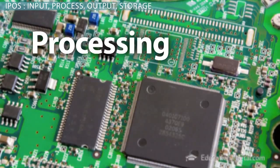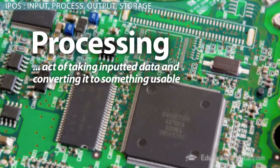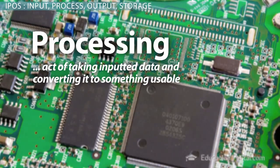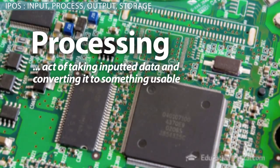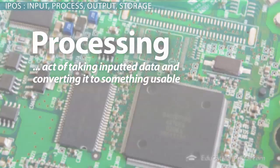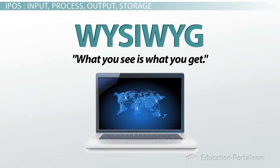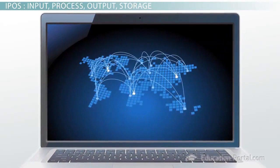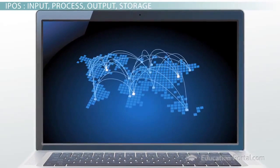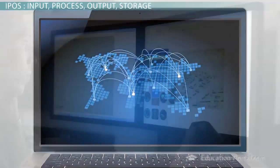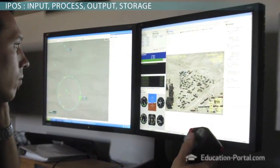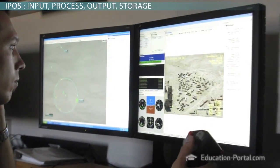Processing takes place in the internal parts of the computer. It is the act of taking inputted data and converting it to something usable. What we typically see on the screen in today's computer world — known as 'what you see is what you get,' or WYSIWYG — is the result of our input being processed by programs so we can have usable output: an English paper, an edited photograph, this video you're watching.